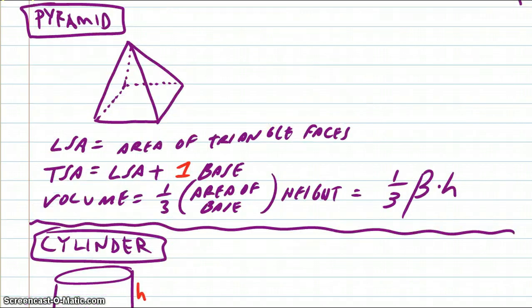The pyramid comes next. The lateral surface area is the triangle faces, and then for total surface area, you want to take that and add on the base. A lot of times we use a square base, but not always. And the volume is one-third the area of that base times the height. The height is how tall the pyramid is.